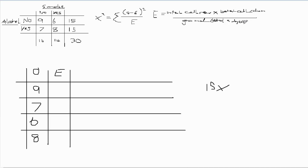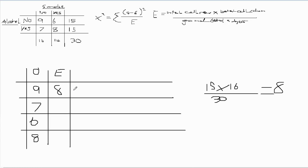We multiply the row total of 15 by the column total of 16, then divide by the total number of subjects — 30 — giving an expected frequency of 8. Doing this for all cells, we get: 8 for yes alcohol and no smoke, 7 for no alcohol but smokes, and 7 again for yes alcohol and yes smoke.